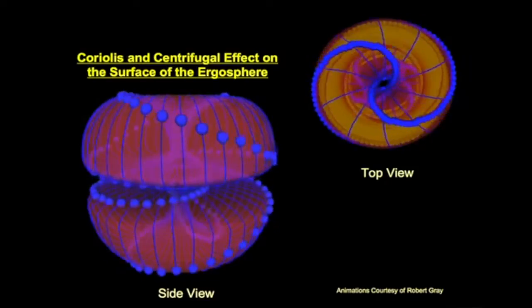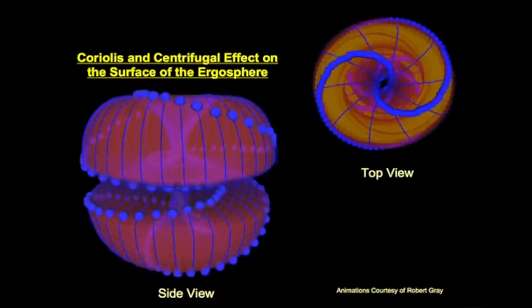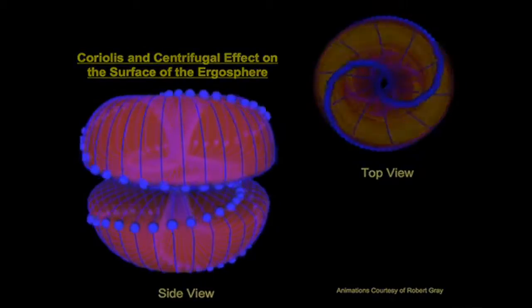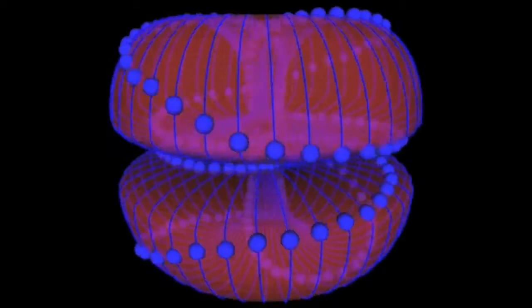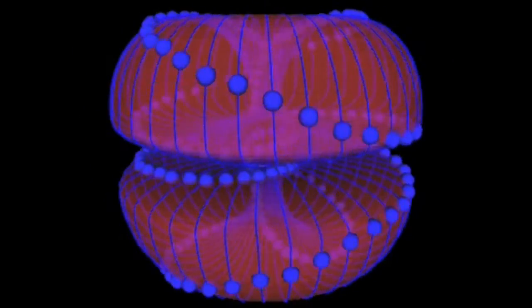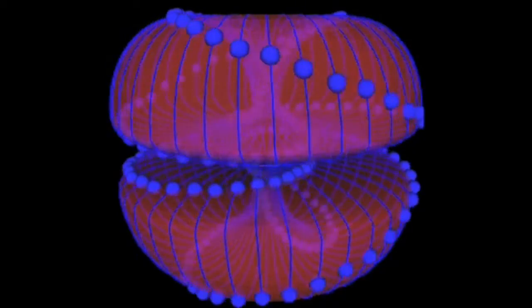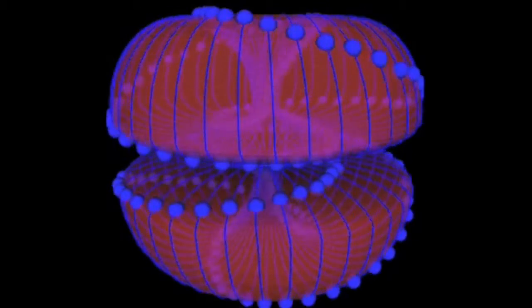It would be like drawing a diagram of a human and saying 'this is a human being' — a picture of a person — but you don't see how cell division works, how mitochondria is transforming, how DNA is transferring information. It's a very simplified three-dimensional model trying to describe something that is beyond simple terms, because it's the structure of space itself.